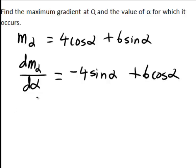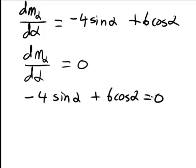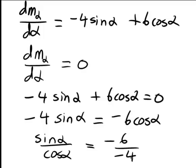We then solve the derivative of M_alpha with respect to alpha equal to 0, as that will give us values of alpha at which both the maximum and minimum gradient occur. Therefore we're solving negative 4·sin(alpha) plus 6·cos(alpha) equals 0. Subtracting the 6·cos(alpha) term gives negative 4·sin(alpha) equals negative 6·cos(alpha). Dividing both sides by cos(alpha) and by negative 4 gives sin(alpha)/cos(alpha) equal to negative 6 divided by negative 4.